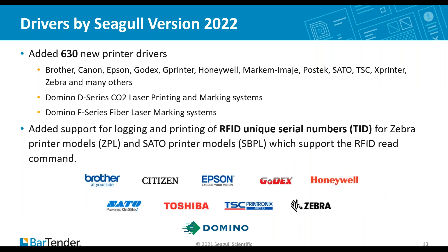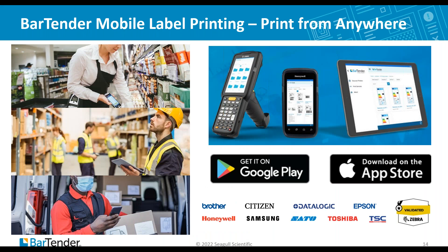With our three Drivers by Seagull releases in 2022, we added support for an additional 630 printers, with a total of nearly 8,000 drivers now. In addition to major printer manufacturers, we also added support for Domino laser printing and marking systems, opening up a whole new area of support. We also extended our RFID capabilities with support for the unique tag ID, or TID, of each RFID chip, which will help customers increase security and reduce counterfeiting. Last but not least, we released our new Bartender mobile app this summer. We're the only major labeling solution provider to offer native Android and iOS apps for printing from your mobile devices. We've had over 25,000 downloads to date, as Bartender customers use our mobile app to print at their source of work, reducing unnecessary steps and costs, as well as increasing label accuracy.